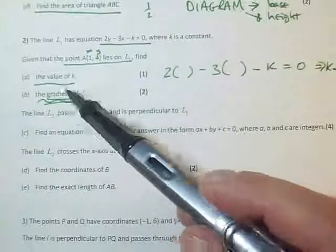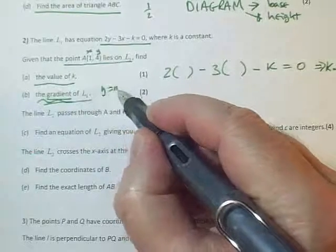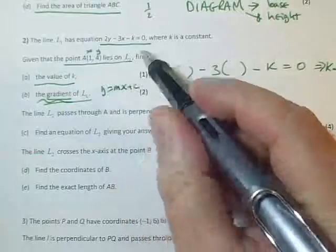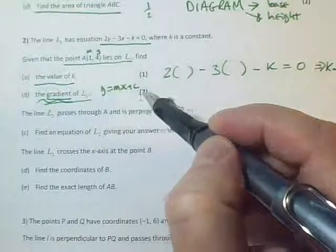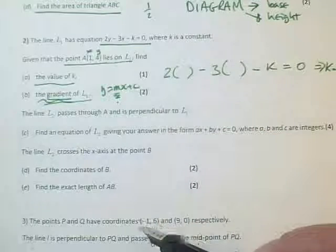So if it's not differentiation, it's not the two-point method, it must be the Y equals MX plus C method. So we need to rearrange this into the form Y equals MX plus C, and then M, whatever that is, will tell us the gradient.